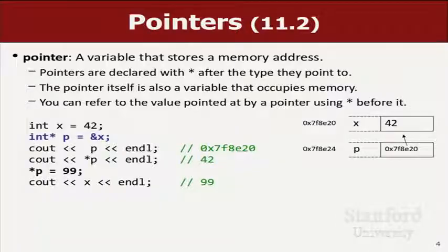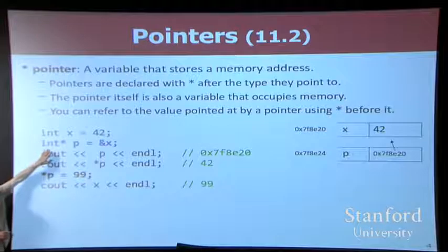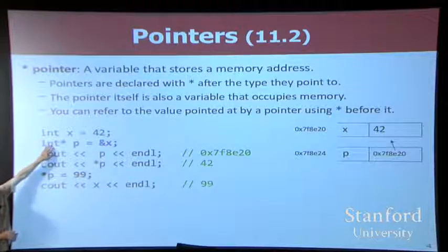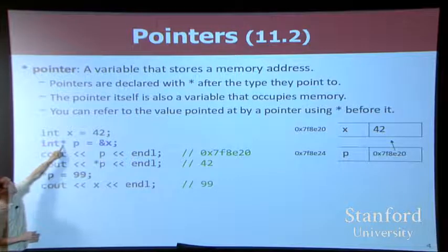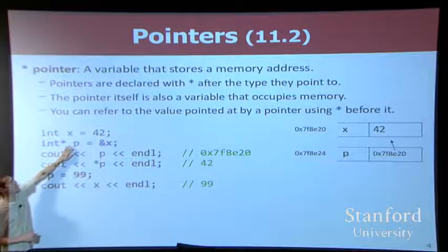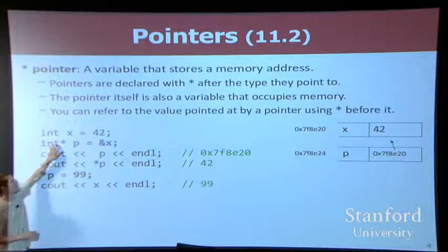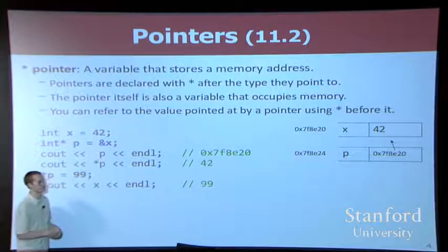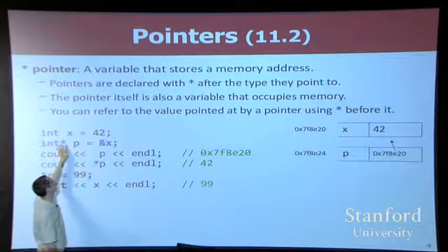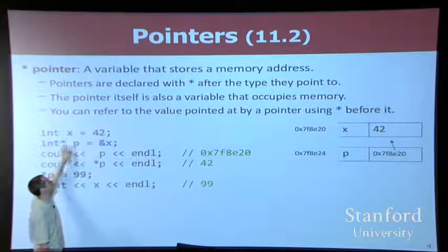So, a pointer is a variable that stores a memory address. Why would you want to do that? Well, I'll show you. But the syntax for a pointer is you write what sort of thing it's going to point at and then a star. So, I made a variable called p, which stores an int pointer. In other words, it stores the memory address that an int is found at. And what you can set p equal to be is the address of some int. So, ampersand x is a value of type int pointer. And I can store that value in a variable of type int pointer.